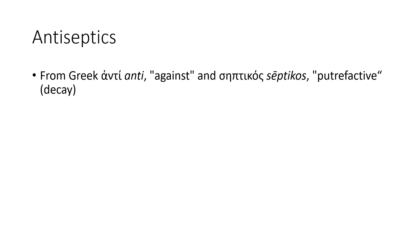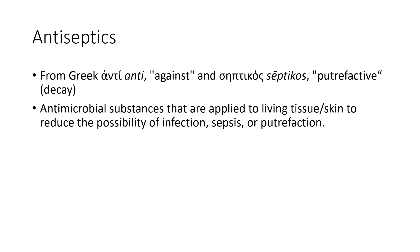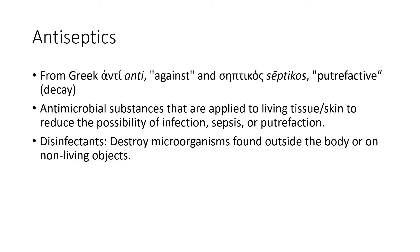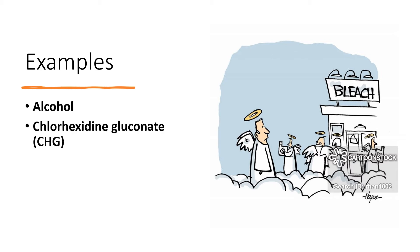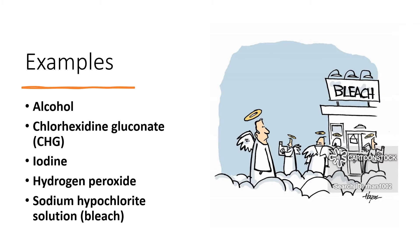The word antiseptic comes from the Greek — 'anti' meaning against and 'septicos' meaning decay. Antimicrobial substances are applied to living tissue to reduce the possibility of infection or sepsis. Disinfectants destroy microorganisms found outside the body or on non-living objects. Some antiseptics are germicides capable of destroying microbes — these are called bactericidal. Others are bacteriostatic, meaning they prevent or inhibit the growth of microorganisms. Common examples include alcohol, chlorhexidine, iodine, hydrogen peroxide, and sodium hypochlorite (bleach).